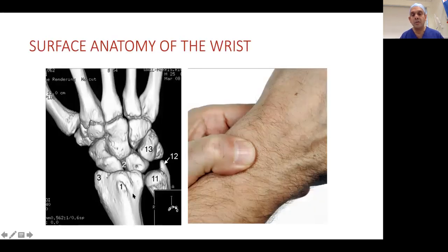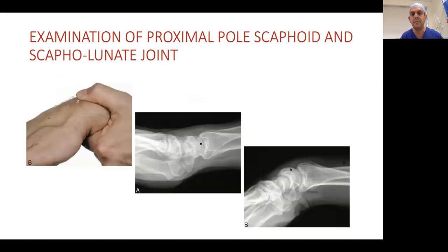Let's start with surface anatomy. This is the dorsal view of a wrist. Relevant to scaphoid is the scapholunate ligament area — number two — and this is how you palpate the scapholunate ligament with your thumb. In scapholunate ligament injuries, that's where the pain is going to be. As you palmar flex, the proximal pole becomes prominent dorsally, and moving your thumb slightly radial from the scapholunate ligament, you can start palpating the proximal pole of the scaphoid.